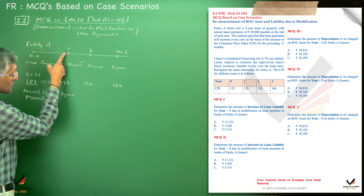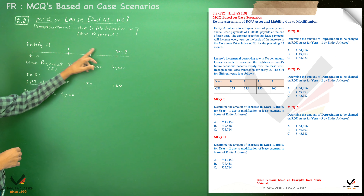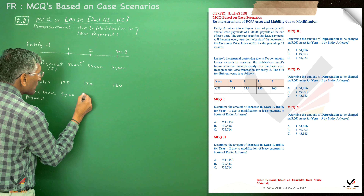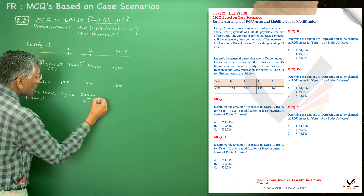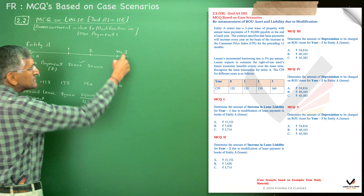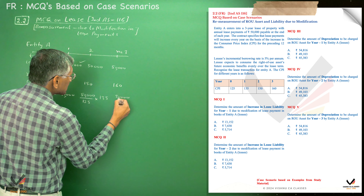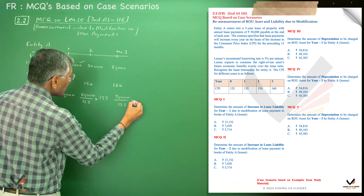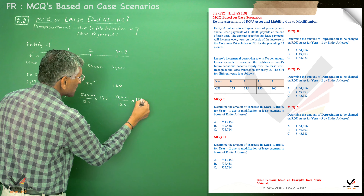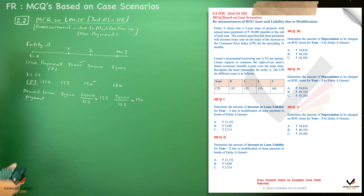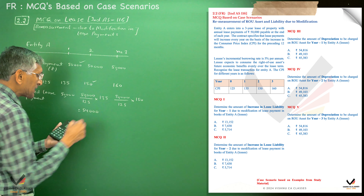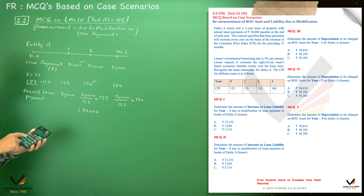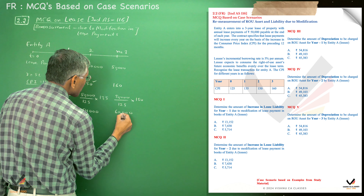We revise the lease payments on the basis of the past 12 months CPI index. For year 1, the original payment is Rs. 50,000 (based on CPI 125) and the past 12 months index is 135, so the payment remains Rs. 50,000. For year 2, the revised payment is 50,000 × 135 ÷ 125 = Rs. 54,000. For year 3, the revised payment is 50,000 × 150 ÷ 125 = Rs. 60,000.